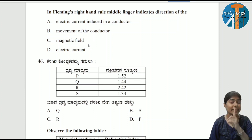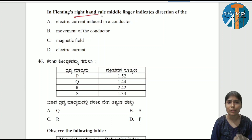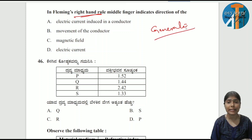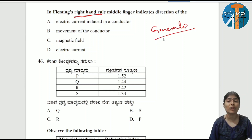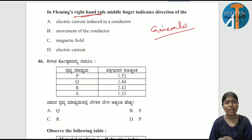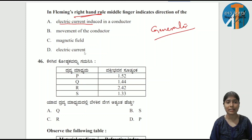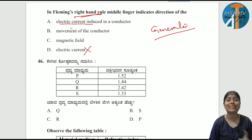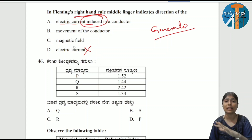This question is from magnetic effects of electric current. In Fleming's right-hand rule — the right-hand rule is related to the generator. A generator converts mechanical energy into electrical energy, that is current. The thumb finger indicates the motion of the conductor, the four fingers indicate the magnetic field, and the middle finger indicates the direction of the electric current induced in the conductor. That is the correct answer.